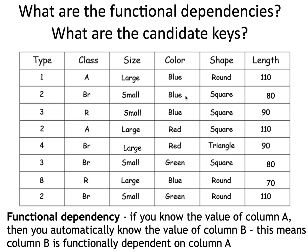If I look at shape — for type value '2', I first see 'square' and 'square', so far functionally dependent. But then '2' appears as 'round' in one row and 'square' in another. Because there's this one different value, shape isn't functionally dependent on type. But I can find that size is functionally dependent on type — all instances of type '2' have 'small', and type '3' has 'large'. I also found that class is dependent on length.